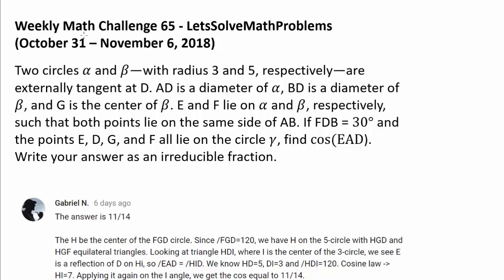Let's go over a solution to weekly math challenge 65. Two circles alpha and beta with radius 3 and 5 respectively are externally tangent at D.